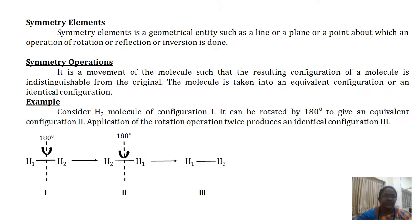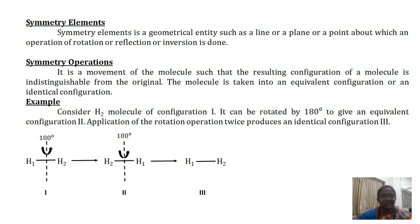The definition of a symmetry element is a geometrical entity such as a line, a plane, or a point about which an operation of rotation, reflection, or inversion is carried out. A symmetry operation is a movement of a molecule such that the resulting configuration is indistinguishable from the original one.